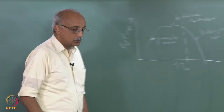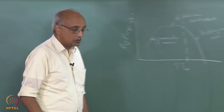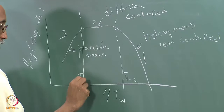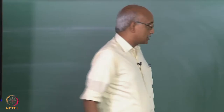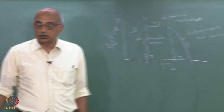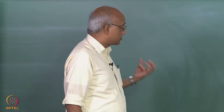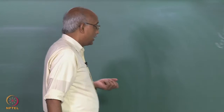The transition temperatures are very interesting. Calling these Region 1, Region 2, and Region 3, the temperature T1-2 represents the transition from heterogeneous reaction control to diffusion control, while T2-3 represents the transition from diffusion control to a regime controlled primarily by homogeneous gas-phase reactions.